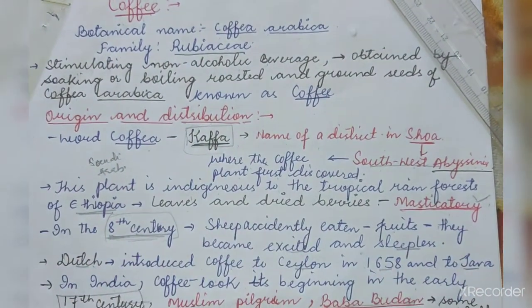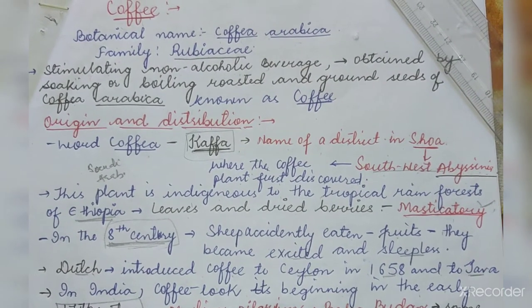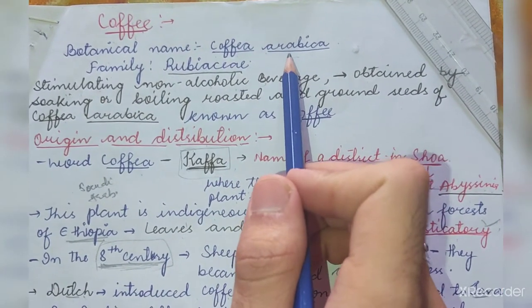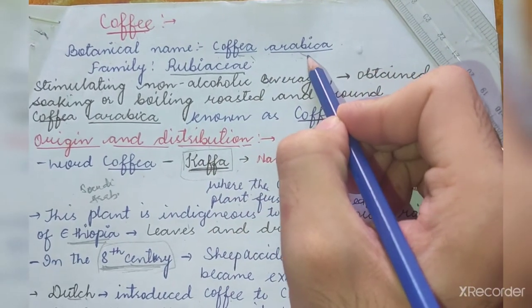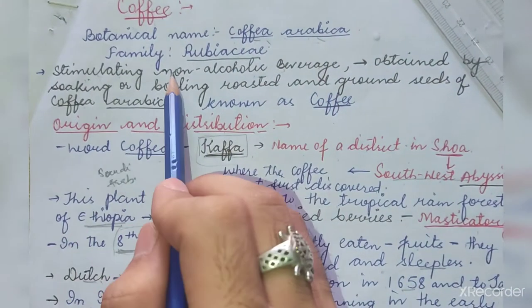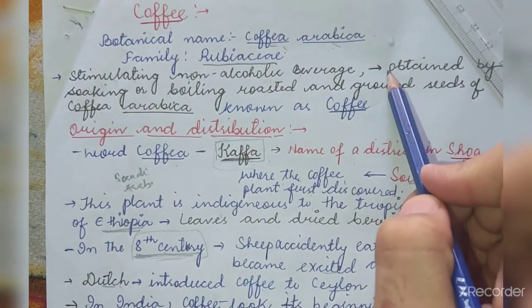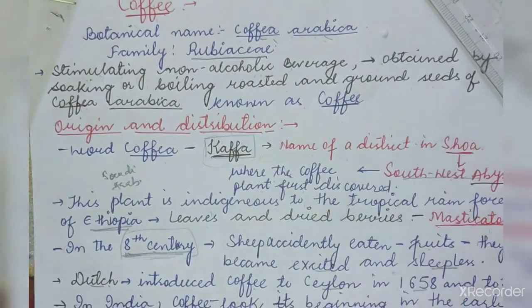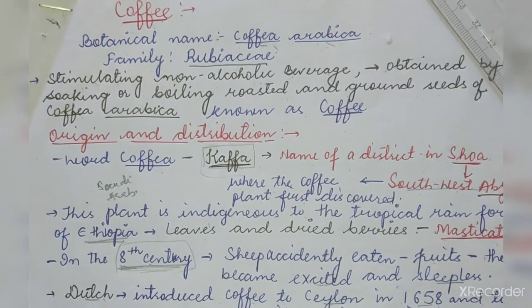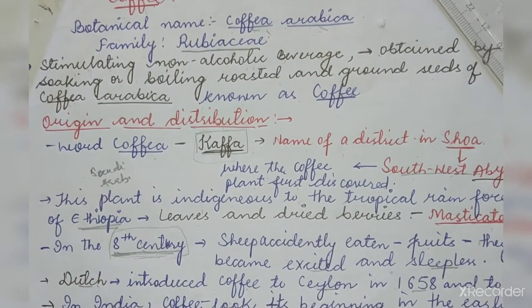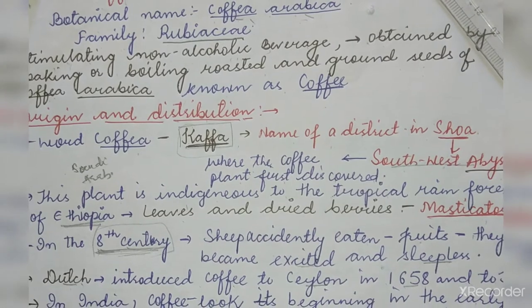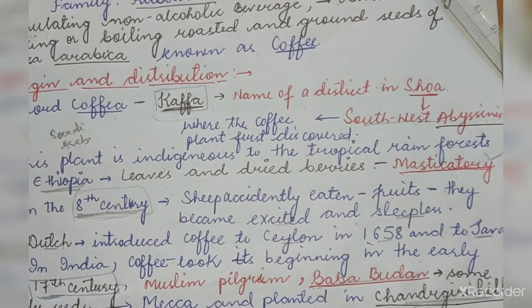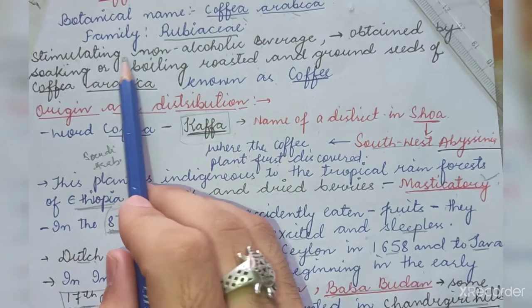First of all, we will know about the botanical name and the family of coffee. The botanical name is Coffea arabica — Coffea is the genus and arabica is the species. The family is Rubiaceae. Coffee is a stimulating non-alcoholic beverage obtained by soaking and boiling roasted and ground seeds of Coffea arabica. It is stimulating but non-alcoholic, meaning it does not have the harmful effects on the body that alcoholic beverages have.